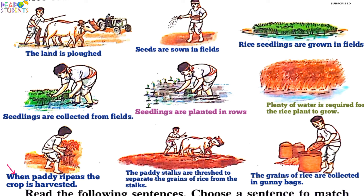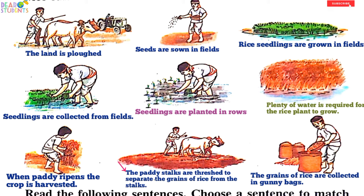When the crop ripens, the crop is harvested. Next, the paddy stalks are threshed to separate the grains of rice from the stalks. Next, the grains of rice are collected in gunny bags.